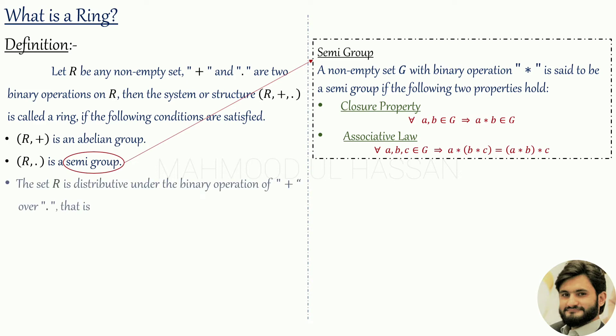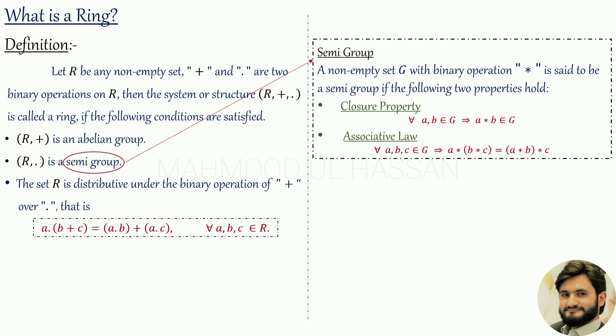The third condition is that set R is distributive under addition over multiplication. That is, a dot (b plus c) equals a dot b plus a dot c, where dot represents multiplication, for all a, b, c belonging to set R. So if any non-empty set R with two binary operations of addition and multiplication satisfies these three properties, then we call that set R a ring.